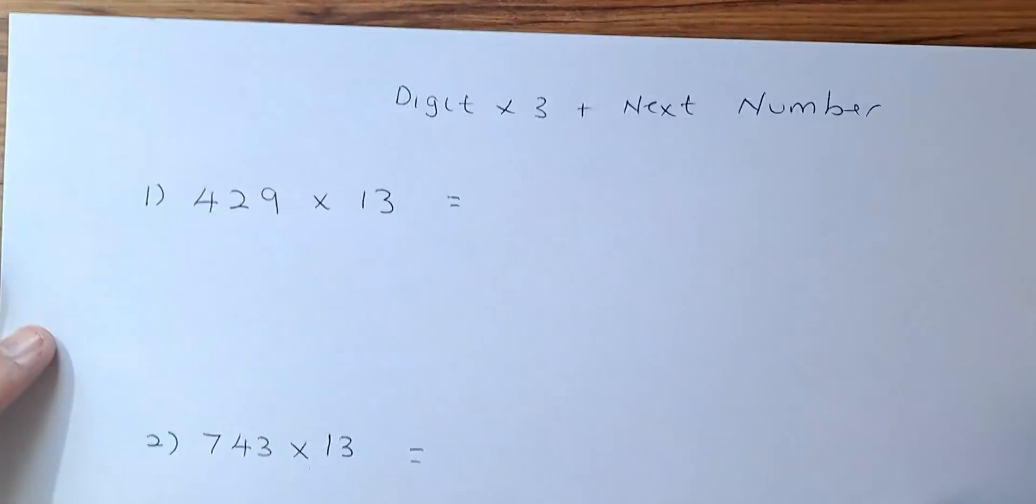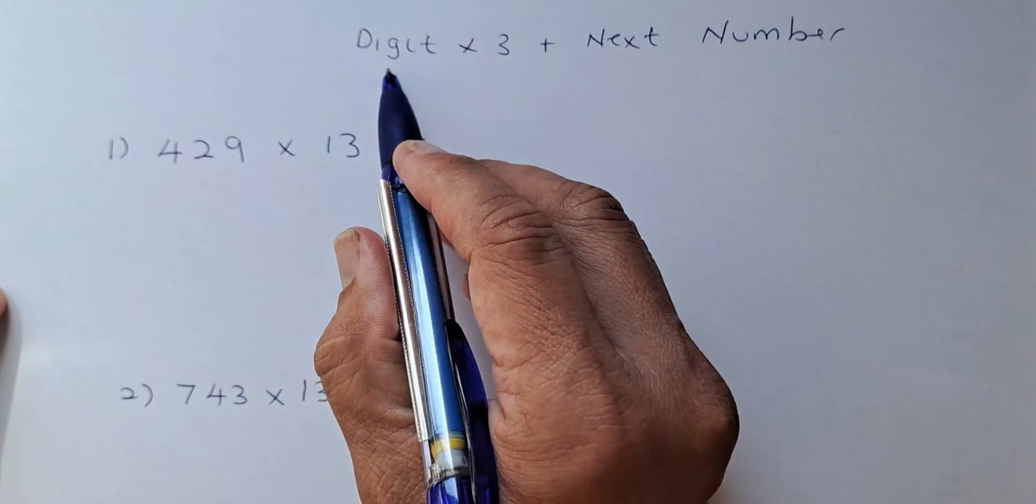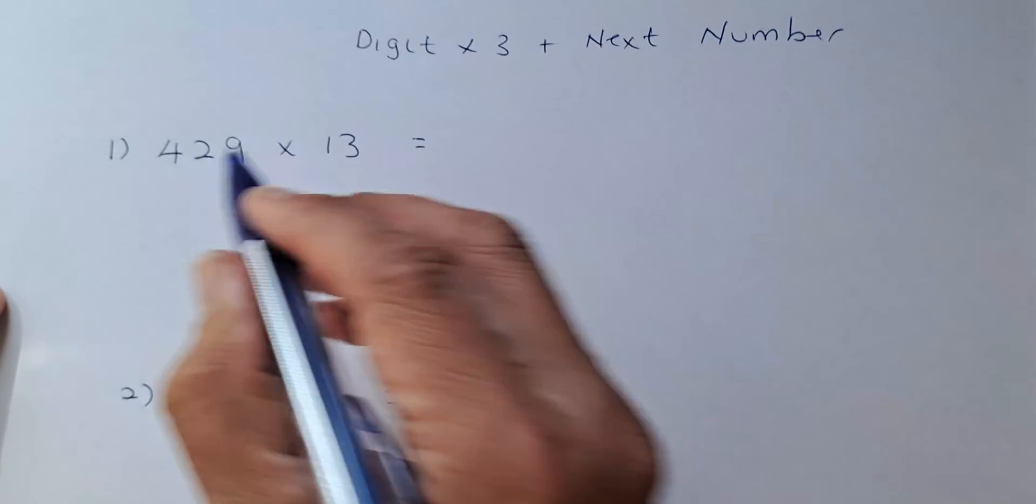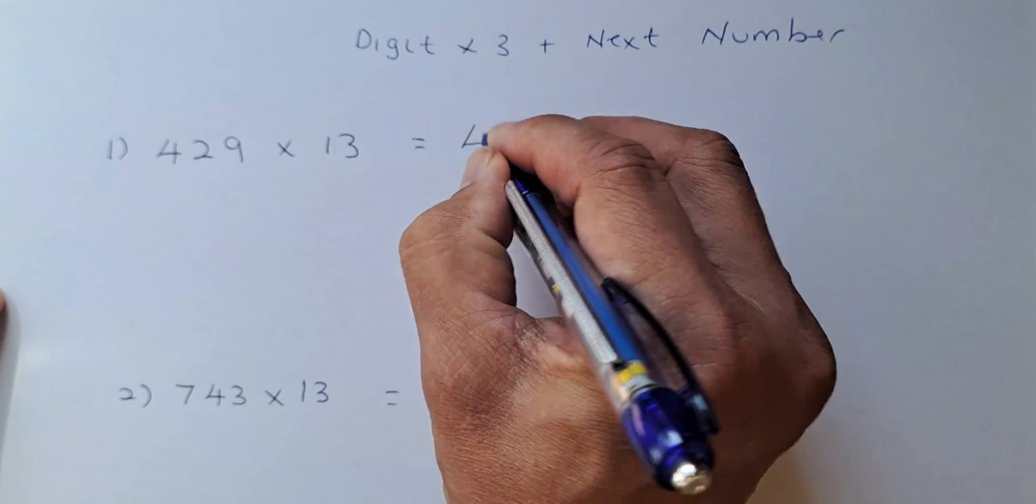The example looks like this. So we have to remember, digit times 3 plus the next number. So if 429 times 13, the first number will always be 4. It will be the same.